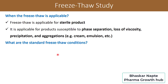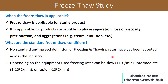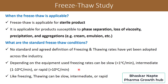What are the standard freeze-thaw conditions? This is one of the most striking questions for many professionals. Unfortunately, there is no standard agreed definition of freezing and thawing rates — it is adopted based on your own product application. Depending on the equipment used, the freezing rate can be slow, intermediate, or even rapid, and the same is true for thawing. It depends on the equipment you are using to conduct the freeze-thaw study.